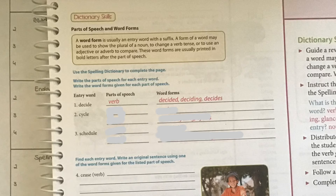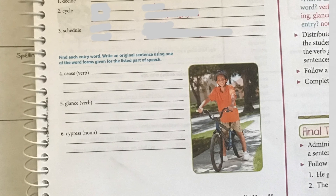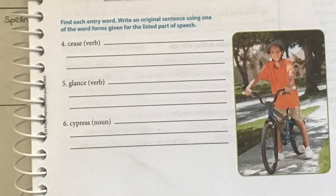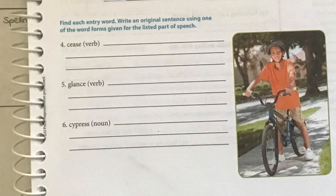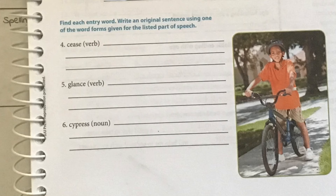So you're going to go ahead and look up the other two words. We're going to skip down to the bottom part. Write an original sentence using one of the word forms given for the listed part of speech. I'll look up cease because it's right here on the previous page. Your first word here is cease — it's used as a verb. I would write the word forms they give you on the top line, and then use the bottom two lines for your sentence.